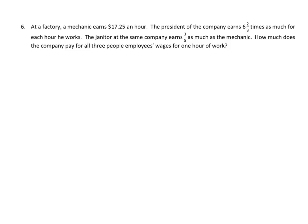The last problem is another one of those difficult ones. Last year, they had different numbers here. This year, they changed them and made them a little bit more difficult. At a factory, a mechanic makes $17.25 an hour. The president of the company earns six and two-thirds times as much for each hour he works. By the way, last year it was six and three-fourths, and that would have made things a lot easier. A janitor at the same company earns three-fifths as much as the mechanic, and last year's problem had three-fourths, so we ended up with a common denominator. How much does the company pay all three people employees' wages for one hour of work?